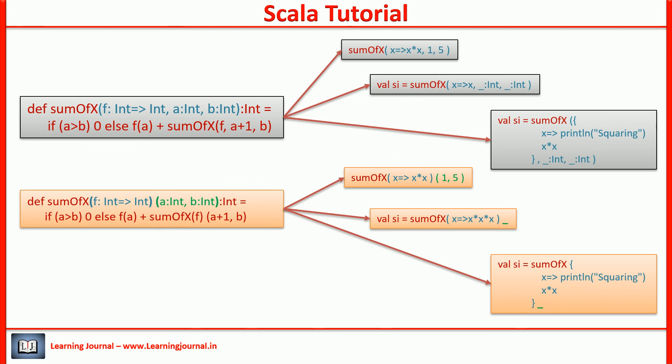So, function currying in Scala is nothing but a syntactic sugar. The function currying allows you to split your function parameters into multiple groups. Scala will internally generate a series of functions for each argument group. That's what we want in partially applied functions. Right? So, we often use it with partially applied function. We can also use them with a higher order function to make a function call in a series.